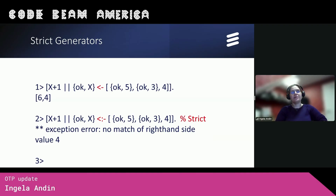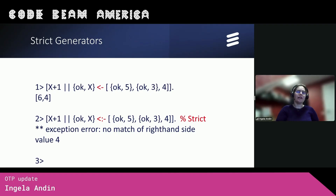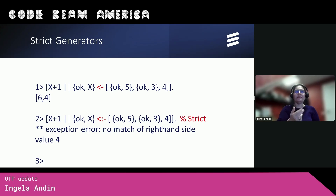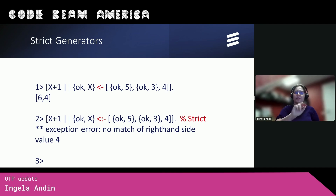We also introduced something called strict generators. For normal list comprehensions, if you have an element in the generator that doesn't match the match expression of the comprehension, it will just be filtered out. But if you use a strict generator, you will now get a runtime error instead.